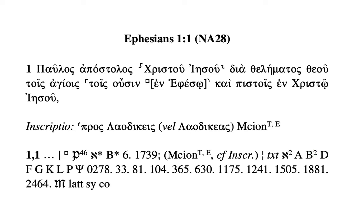Other witnesses are A, D, F, G, K, L, P, and C — all majuscules that support the inclusion of 'en Ephesō' up in the text. One more majuscule is 0278. Then what follows to the end of the line are all minuscules, a whole list of them.